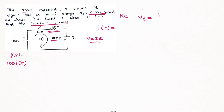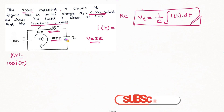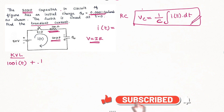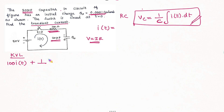The voltage across the capacitor is equal to 1 by C multiplied by the integral of I of T dt. This is the voltage across capacitor formula. If we apply this, we have plus 1 by C — the capacitor value is 20uF, that is 20 into 10 to the power minus 6 — multiplied by the integral of I of T dt.